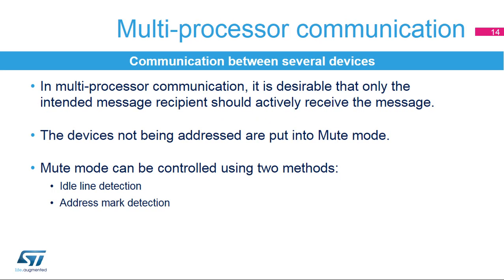To simplify communication between multiple processors, the USART supports a multiprocessor mode. In multiprocessor communication, it is desirable that only the intended message recipient should actively receive the message. The devices not being addressed are put into mute mode. The USART can enter or exit from mute mode using one of two methods: idle line detection or address mark detection.